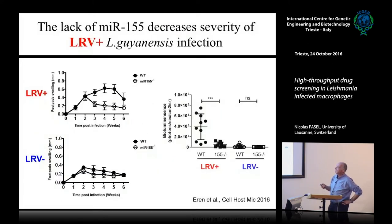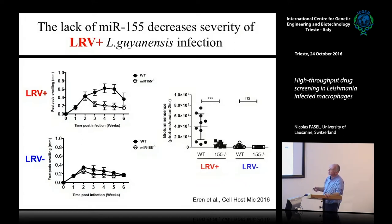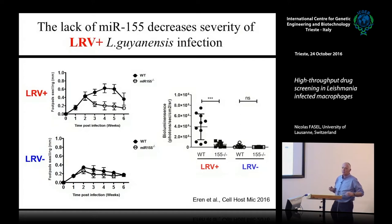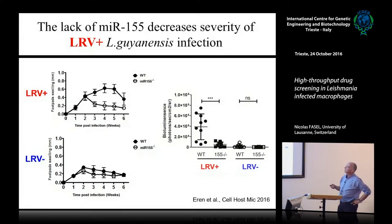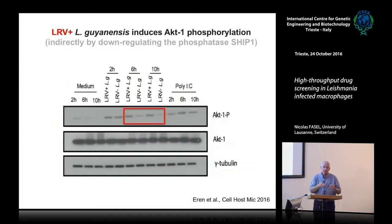Does miR-155 have a role in lesion development? Using 155-knockout mice, if you infect wild-type mice versus 155-knockout mice with LRV-plus, you have a decrease in the size of the lesion — no effect if the mice were infected with LRV-minus. There is also an effect on parasite load: we have parasites carrying luciferase so we can measure photons per second per centimeter squared, and if you remove miR-155, you have fewer parasites in the lesion.